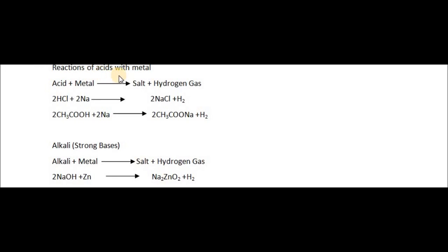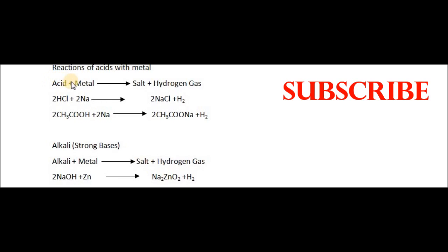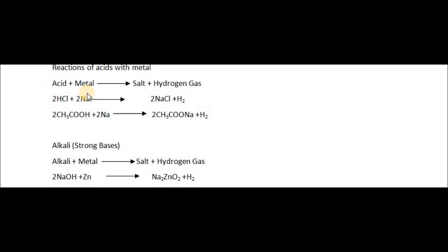Now let's see a few reactions of acids with metals. When acids combine with a metal, the metal displaces hydrogen from the acid and forms a salt and hydrogen gas. The hydrogen displaced from the acid is released as hydrogen gas. For example, hydrochloric acid reacting with sodium gives NaCl and hydrogen gas is released.